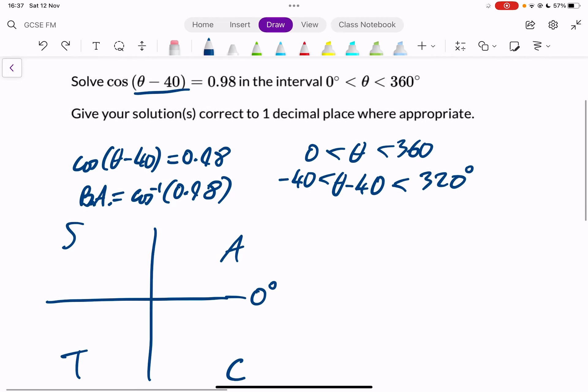So if we look back at our original equation, cos of theta minus 40 is positive at 0.98. And cos is positive in here when everything is positive and in here. And then the basic angle, which I forgot to say. If we do cos inverse of 0.98, we will get 11.5 degrees, that's to one decimal place.